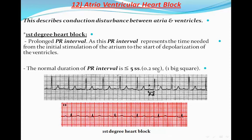Atrioventricular heart block describes conduction disturbances between the atria and ventricles. In first degree heart block, there is prolongation of the PR interval. As we said before, the PR interval represents the time needed from the initial stimulation of the atrium to the start of depolarization of the ventricles. The normal duration of the PR interval is 0.2 seconds or less, equal to five small squares or one big square in width.